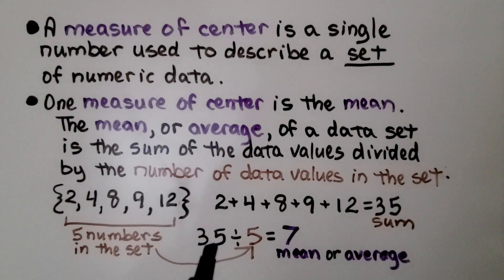We have 35 as the sum. There were five numbers. We divide it by five. That's seven. Our mean or average is seven.